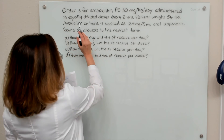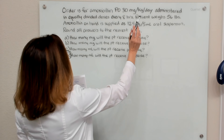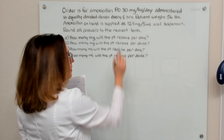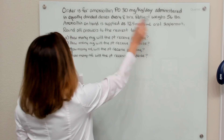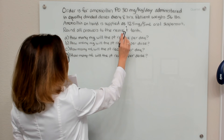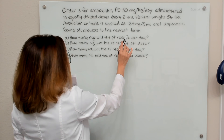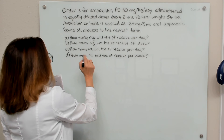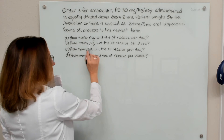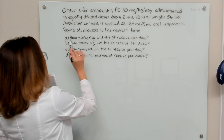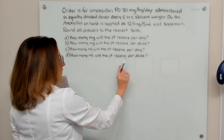In this problem, we have an order for amoxicillin PO, 30 milligrams per kilogram per day, to be administered in equally divided doses every eight hours — that's three times in a 24-hour period. The patient weighs 56 pounds, and the amoxicillin available is 125 milligrams in 5 mL. We need to round all answers to the nearest tenth. We are asked four questions: A) milligrams per day, B) milligrams per dose, C) milliliters per day, and D) milliliters per dose.